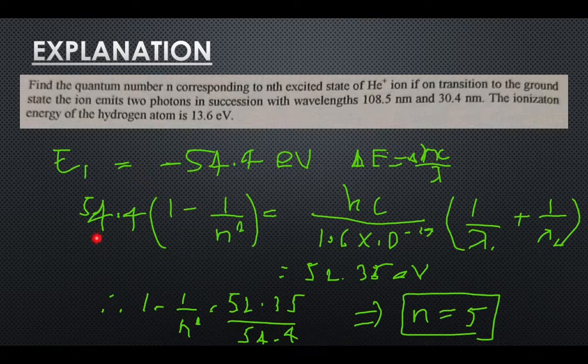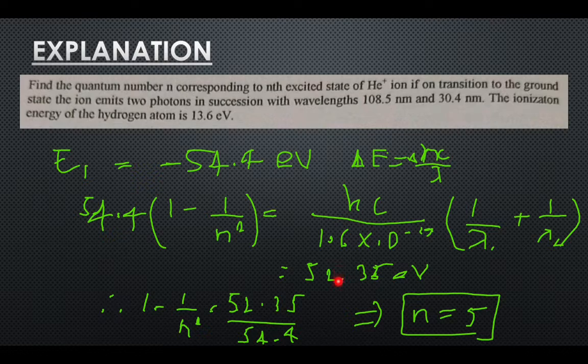So generalizing we get 54.4 upon n squared, that is n equals to 1, minus 54.4 upon n squared. This n is the nth excited state. Bringing common 54.4 out is equal to hc upon lambda plus hc upon lambda 2. So now substituting these values, hc as respective values, we get 52.35 electron volts as the answer.